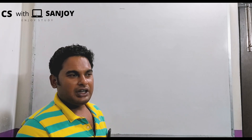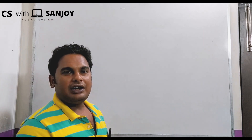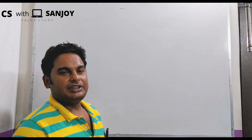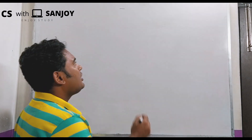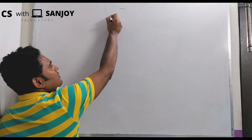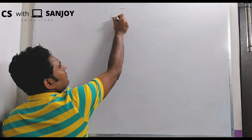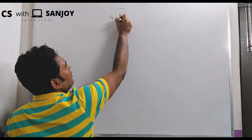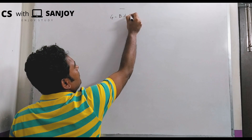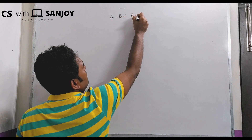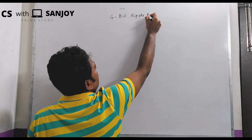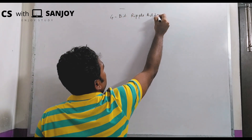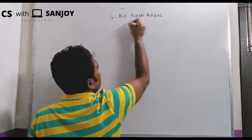The Ripple Adder is a 4-bit Ripple Adder.